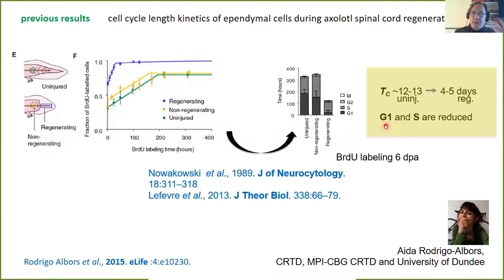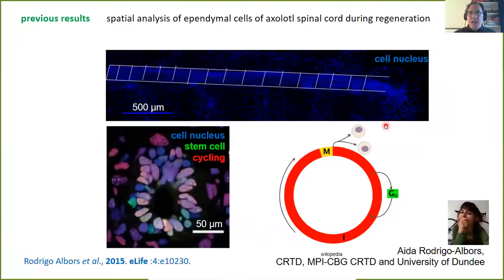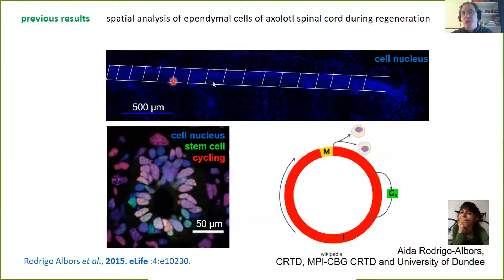In a way this helps us understand that what's happening is a kind of going back in time for these cells — they are acquiring a more proliferative phenotype, recapitulating programs of early development. We then tried to understand how the proliferation events are distributed along space, in particular along the AP axis: how cell divisions change along the AP axis during the process of regeneration.